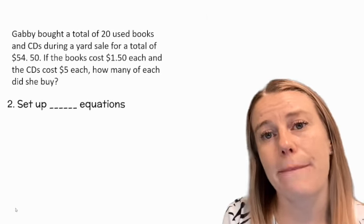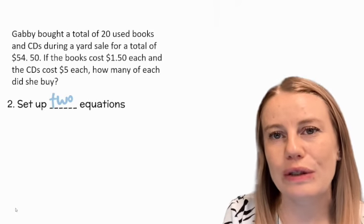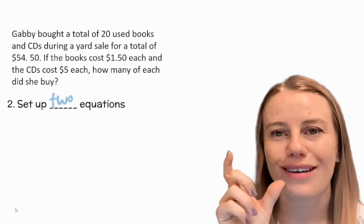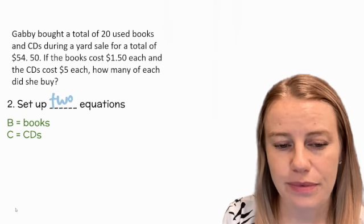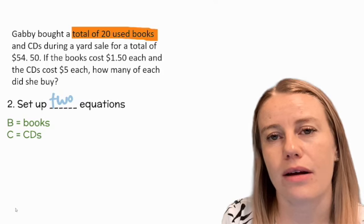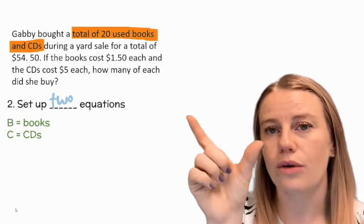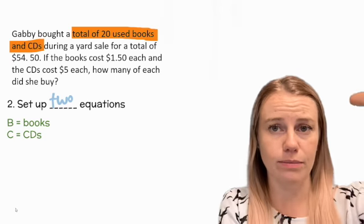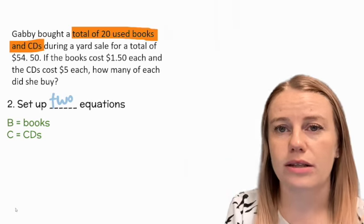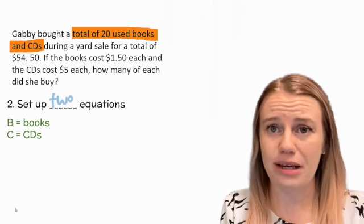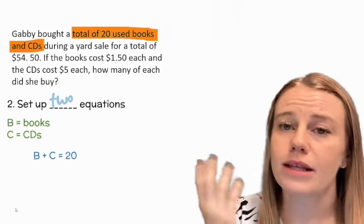Step two is setting up our two equations. We were told that we bought 20 used books and CDs, so together, combined, the total amount was 20. That means B plus C equals 20. That's going to be our first equation.